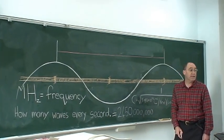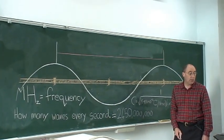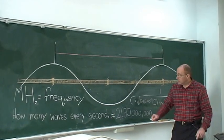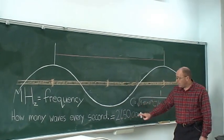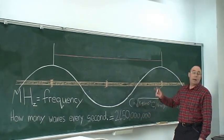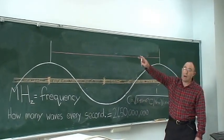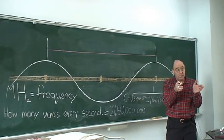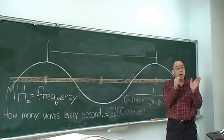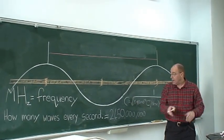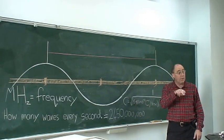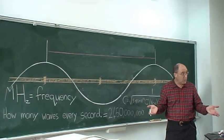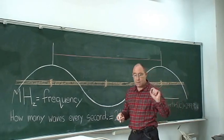So, this number of waves — if I can measure from here to here, I know how long each wave is. If I know how long it is and how many waves there are, and I multiply them, I know how far the light has gone in one second.